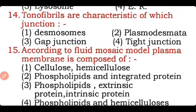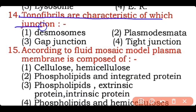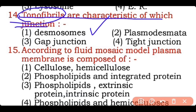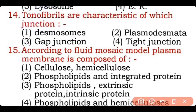Question 14: Tonofibrils are the characteristic of which junction — desmosomes, plasmodesmata, gap junctions, or tight junctions? Correct answer is option one — tonofibrils are the characteristic of desmosomes, which are strong connections that join the intermediate filaments of neighboring cells.